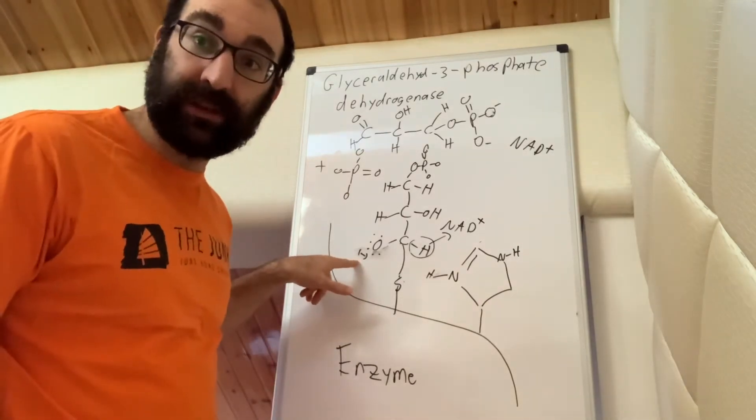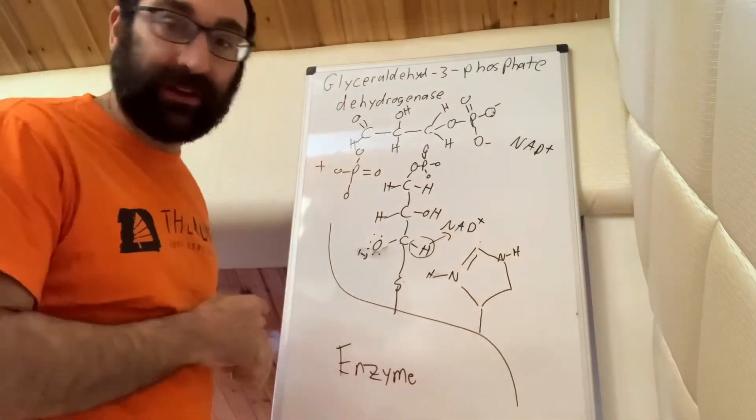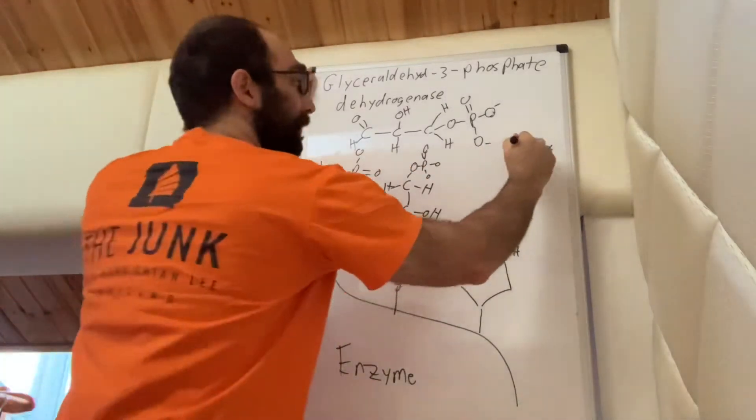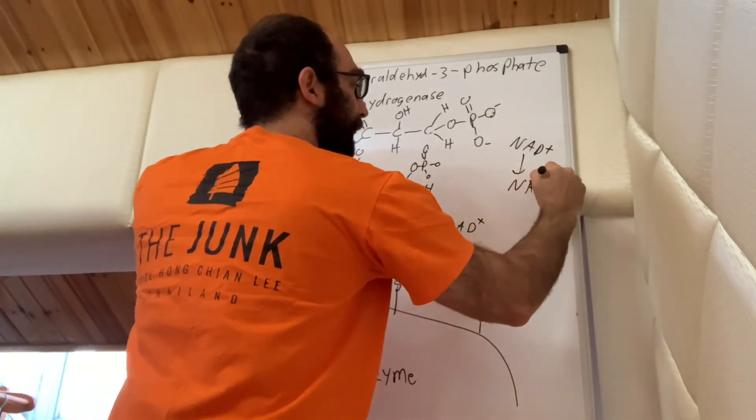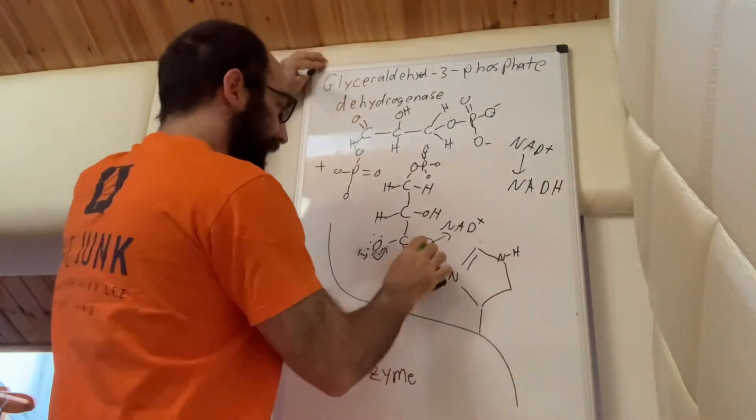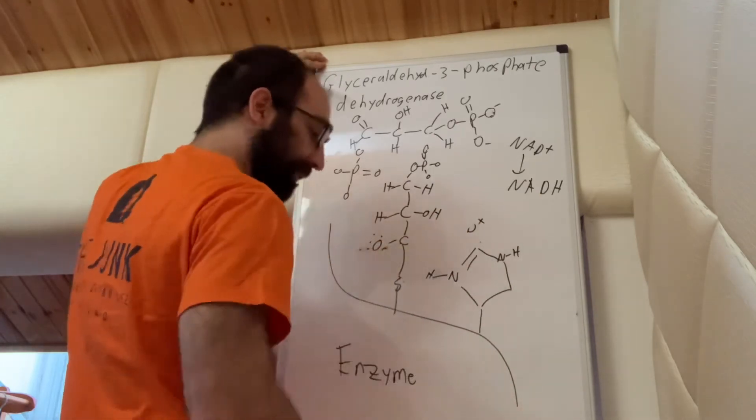But luckily for this carbon, this oxygen has a negative charge, and even though it's really electronegative, oxygen doesn't actually want that negative charge. So these electrons come down, that hydrogen disappears. We're going to form NADH. So we've got NADH formed.